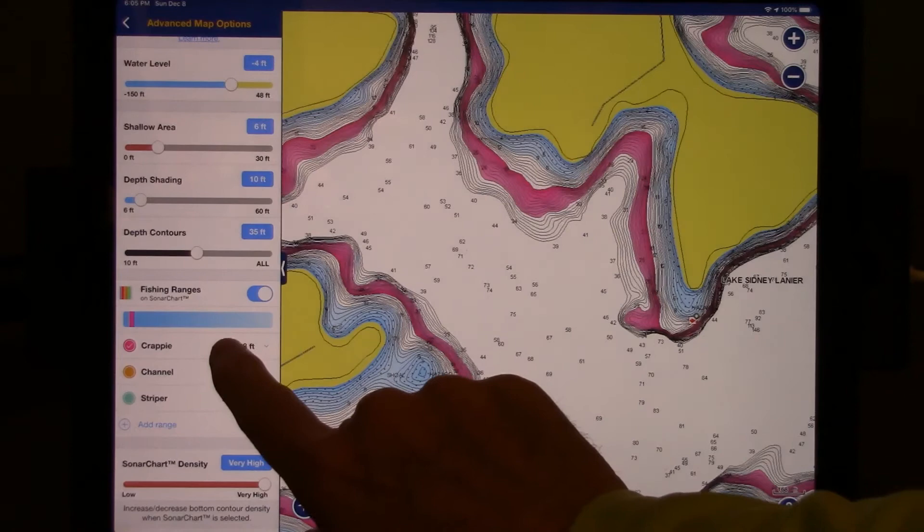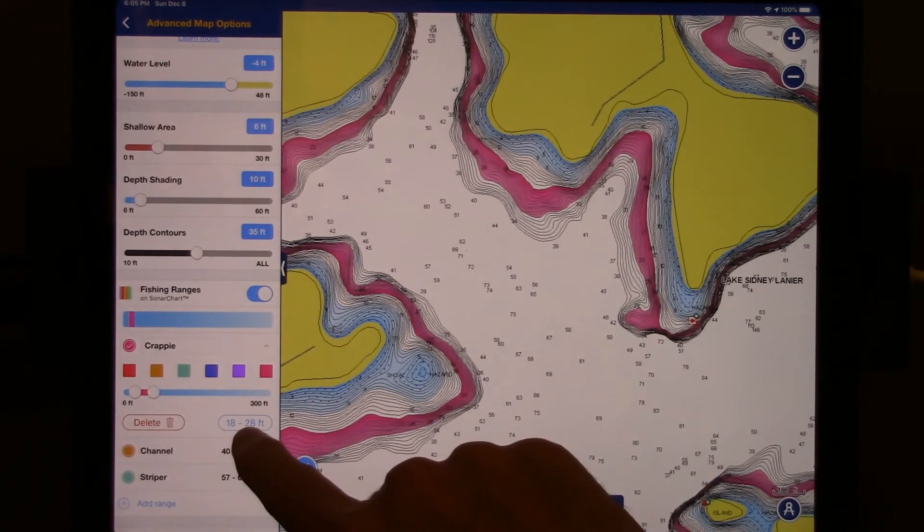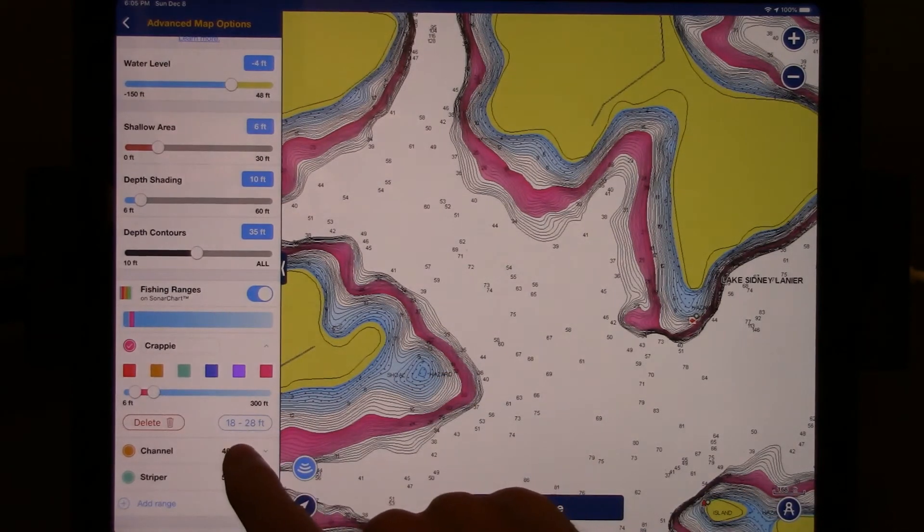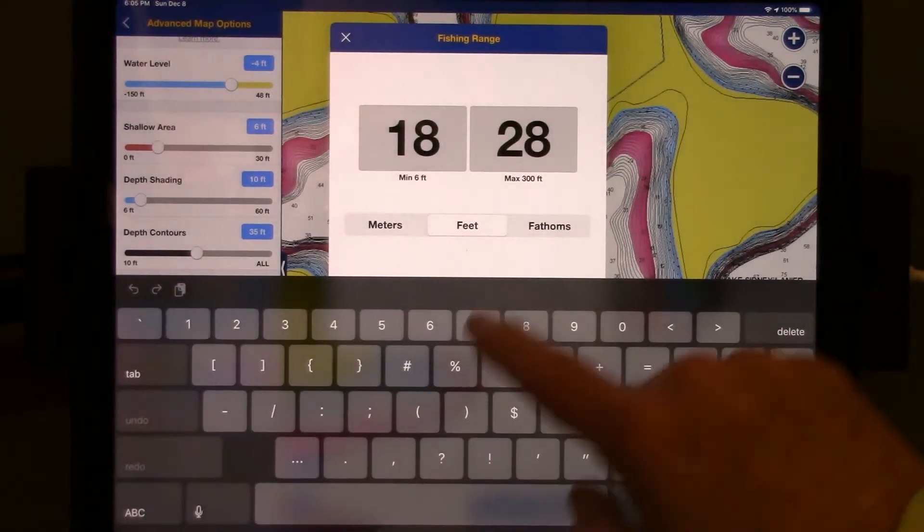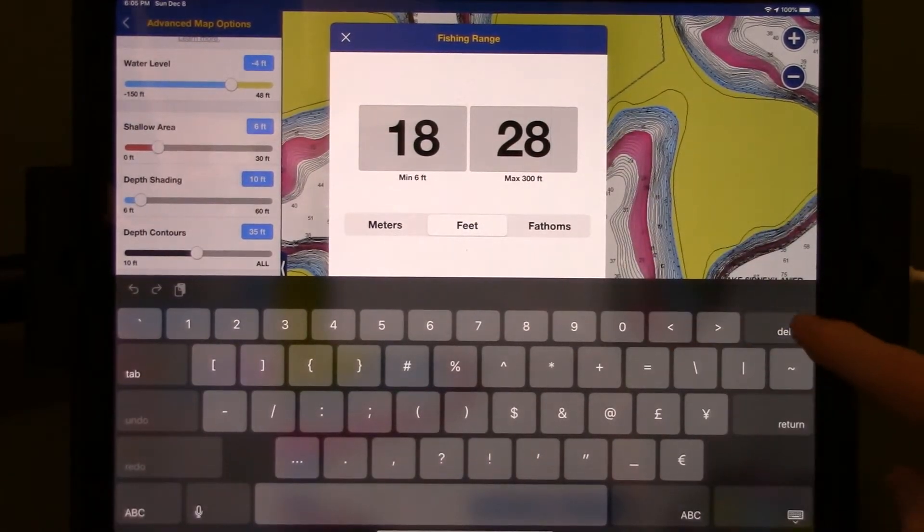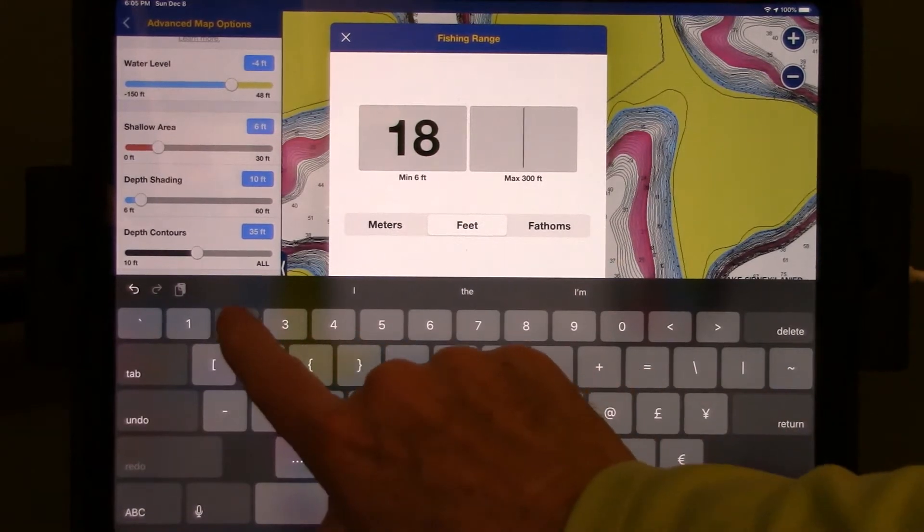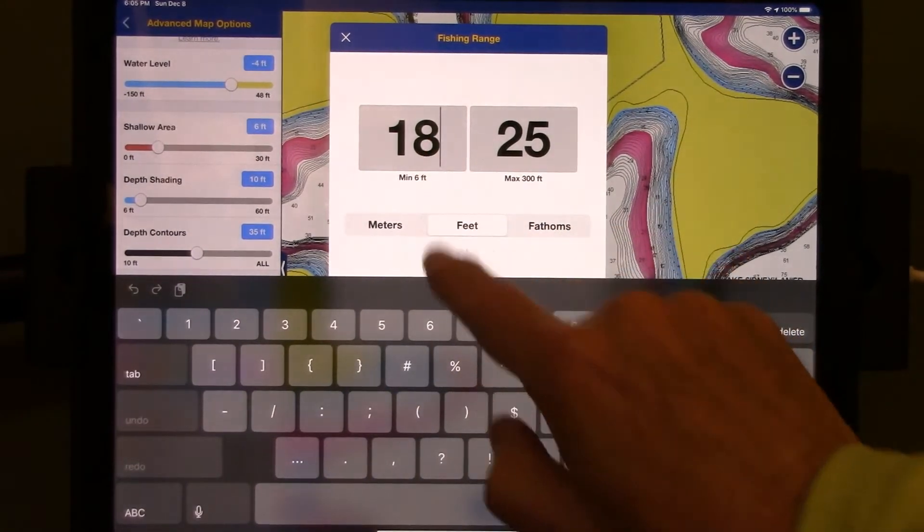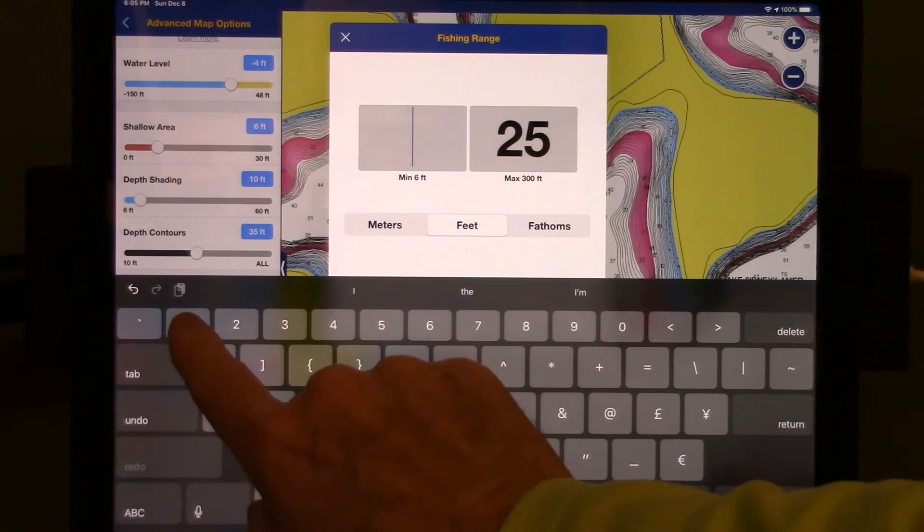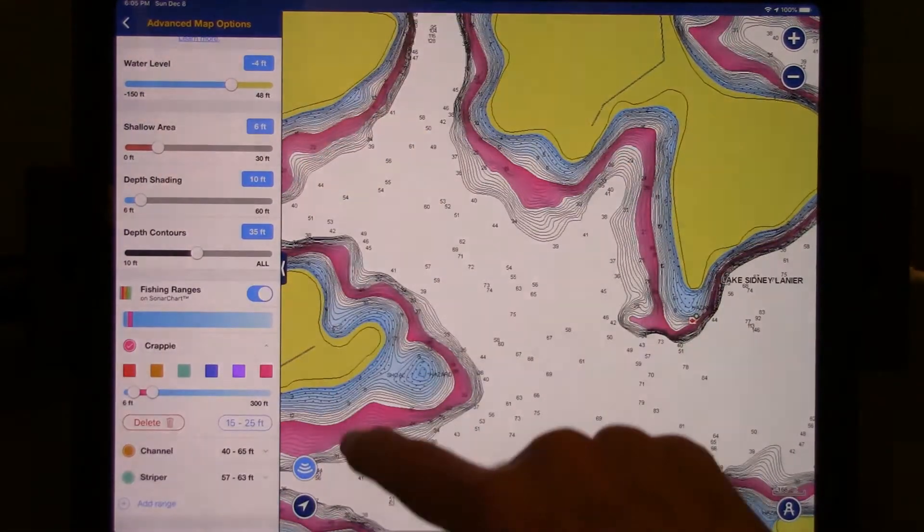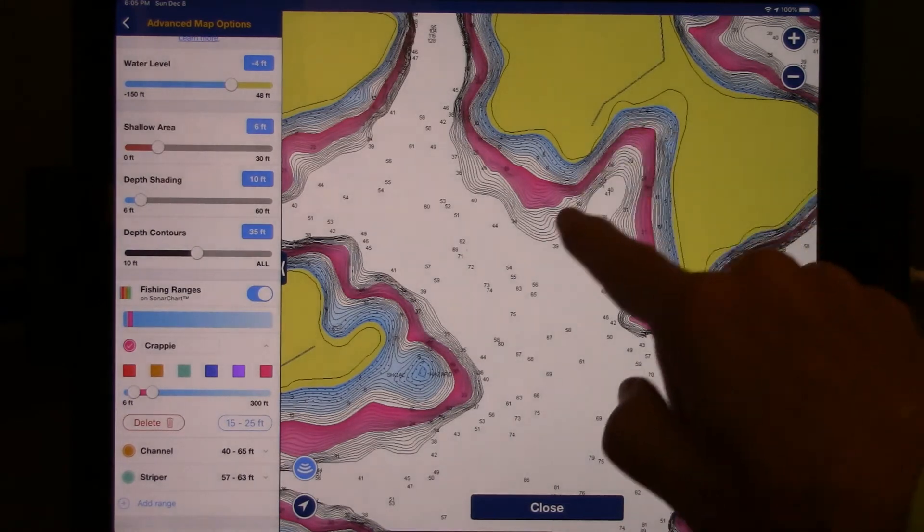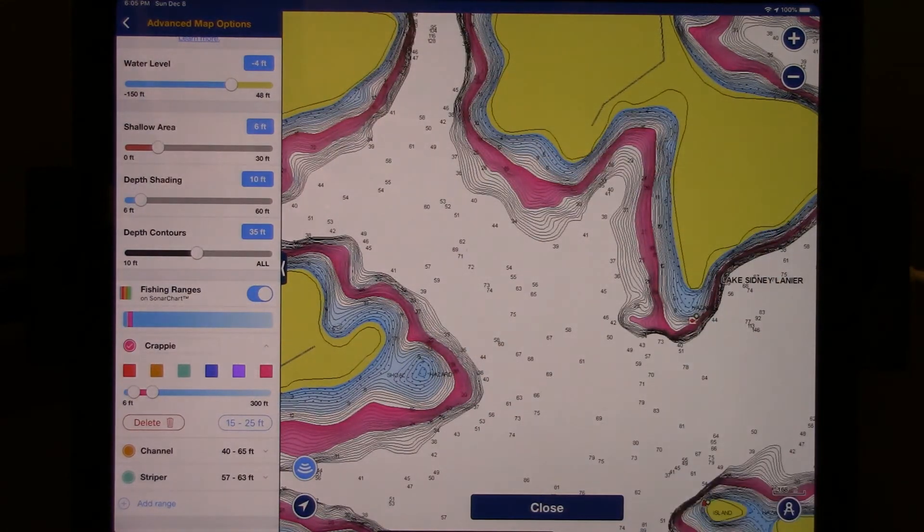If the fishing report has changed, let's say that now the fishing report says that you're between 15 and 25 feet, you select your depth range, set the maximum first, and close the fishing range window. Now that has automatically changed all of the highlighted zones on your chart.